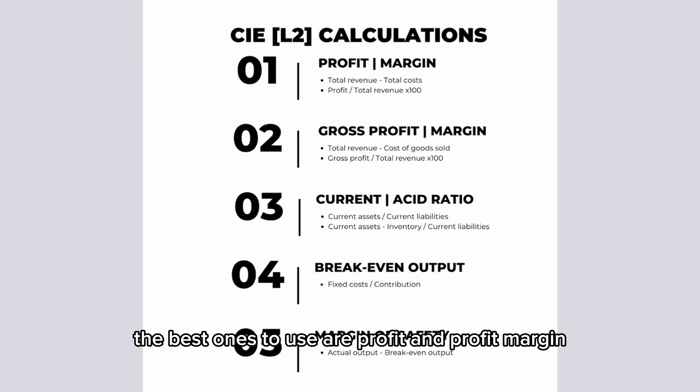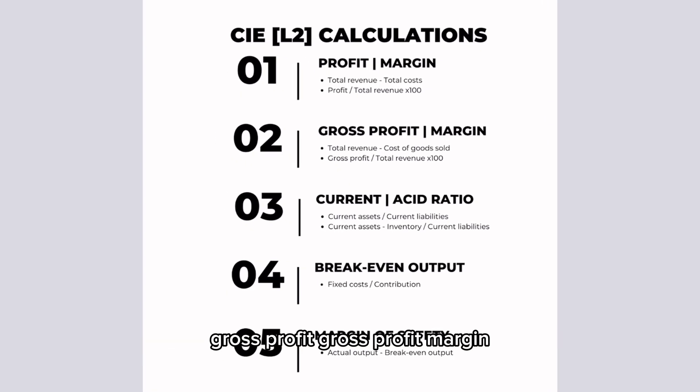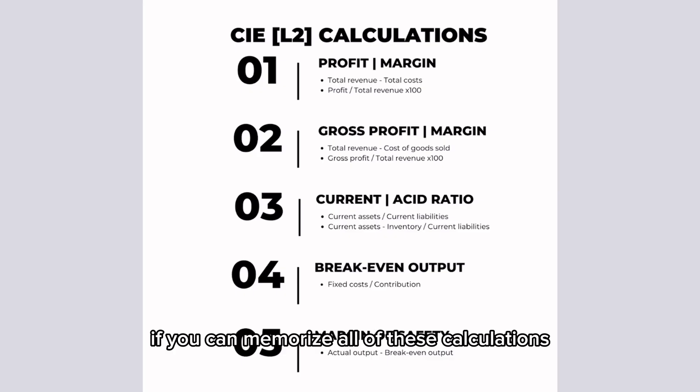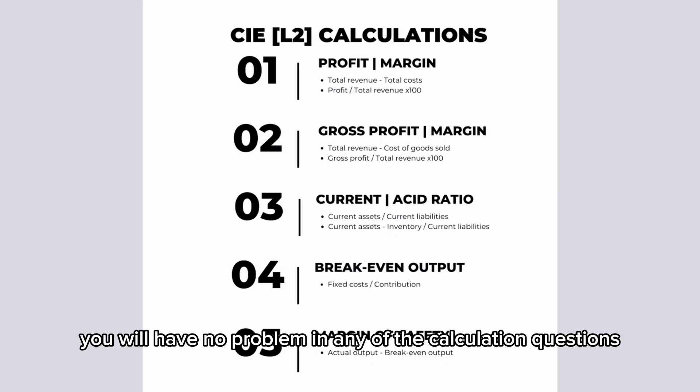The best ones to use are profit and profit margin, gross profit, gross profit margin, current ratio, asset test ratio, break even output and margin of safety. If you can memorize all of these calculations, you will have no problem in any of the calculation questions.